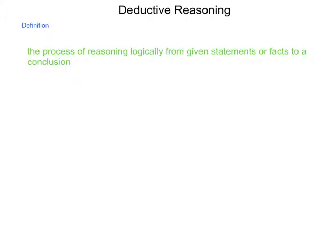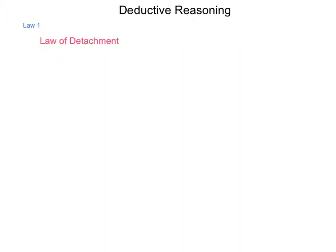The first of these two laws is called the law of detachment. Using our notation for conditionals and bi-conditionals, the law of detachment basically says that if you have the statement if P then Q, and this is true...